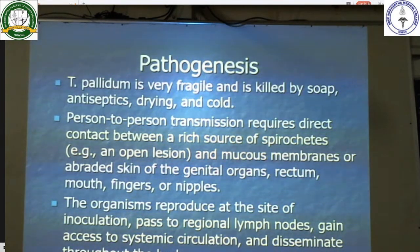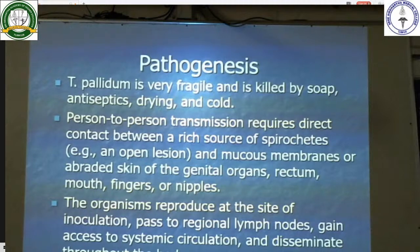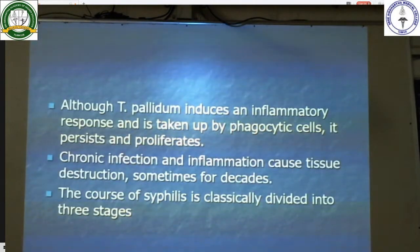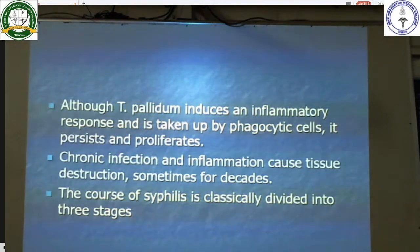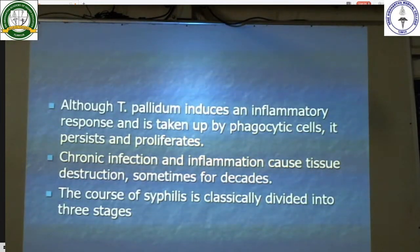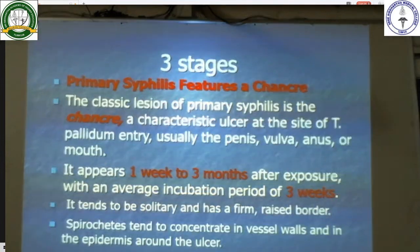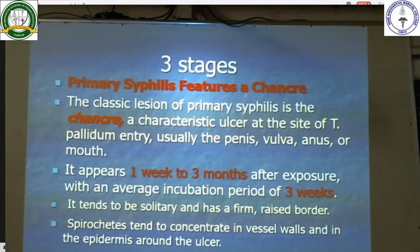The organisms reproduce at the site of inoculation, pass to regional lymph nodes, gain access into the systemic circulation, and then disseminate throughout the body. Although Treponema pallidum induces an inflammatory response and is taken up by phagocytic cells, it persists and proliferates. Chronic infection and inflammation cause tissue destruction, sometimes occurring for decades. The course of syphilis is divided into 3 stages: primary syphilis, secondary syphilis, and tertiary syphilis.